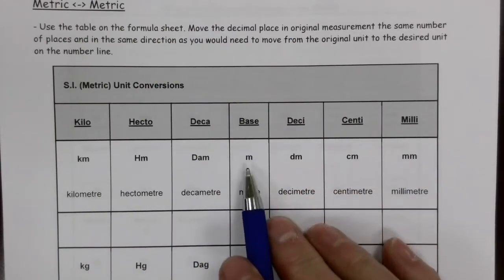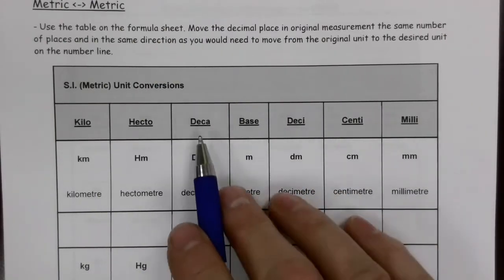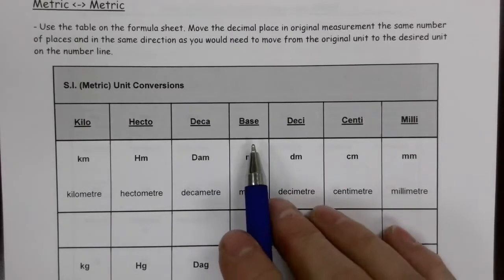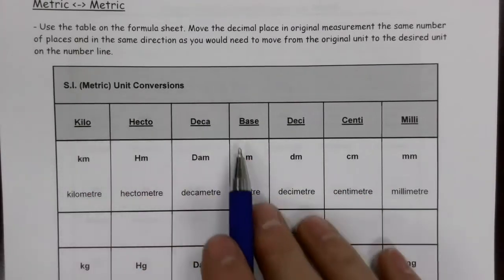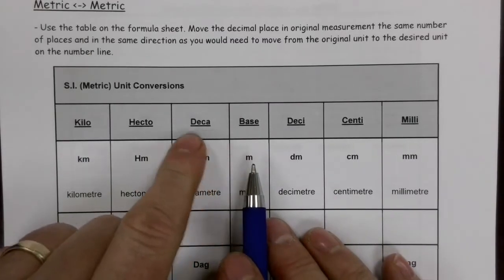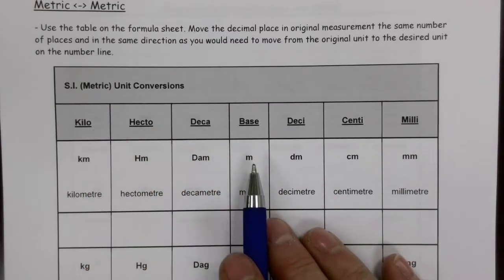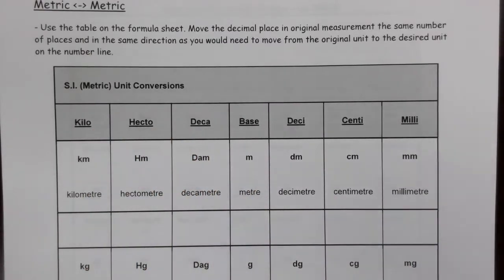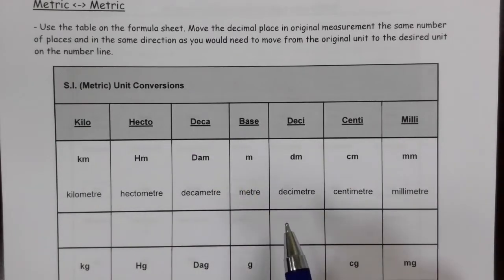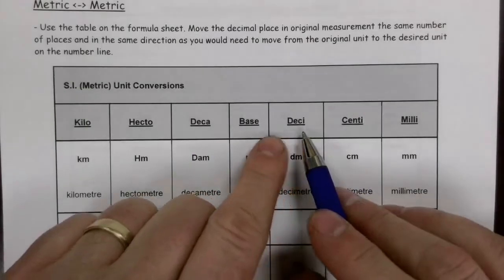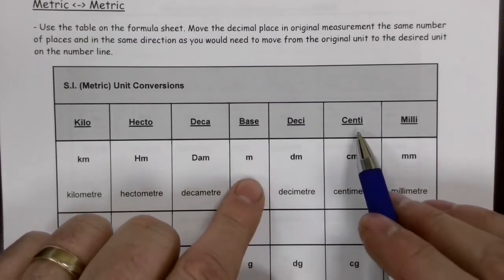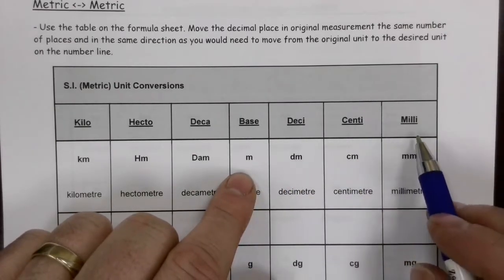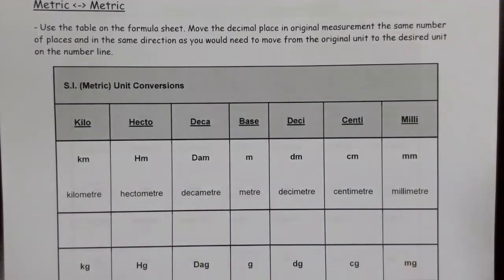The base unit for length is the meter. A decameter is 10 meters, a hectometer is 100 meters, and a kilometer is 1,000 meters. The prefixes communicate how many meters are in that measurement. Conversely, a decimeter is a tenth of a meter, a centimeter is a hundredth of a meter, and a millimeter is a thousandth of a meter.